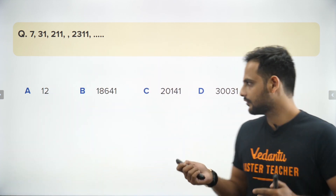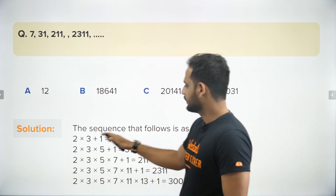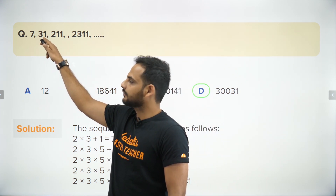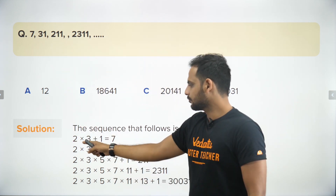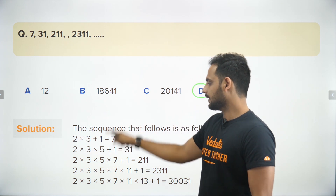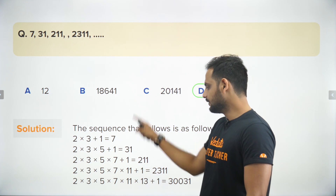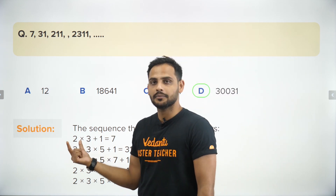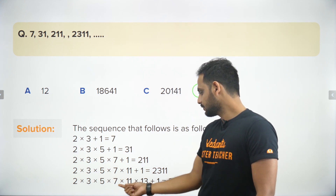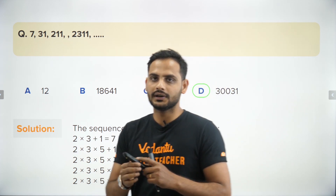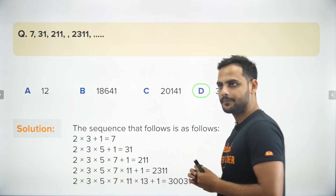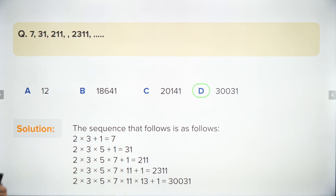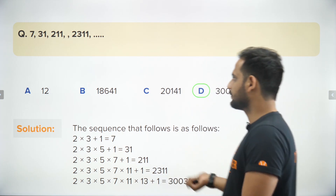The correct answer is option D. The pattern is: 2×3 + 1 = 7, then 2×3×5 + 1 = 31, then 2×3×5×7 + 1 = 211, then 2×3×5×7×11 = 2310, and adding the next prime 13 gives 2311. We are multiplying consecutive prime numbers — 2, 3, 5, 7, 11, 13 — and adding 1. This was a very difficult question. Keep prime number patterns in mind!